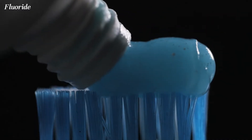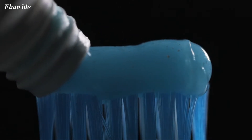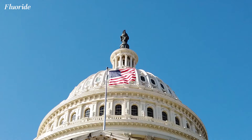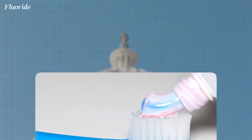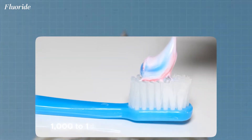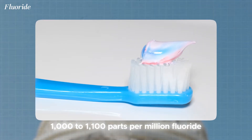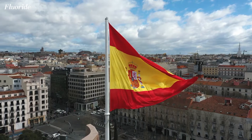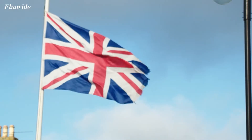Fluoride prevents cavities and is also thought to help with the formation of dental enamel. In the US, toothpastes contain around 1,000 to 1,100 parts per million fluoride, but this tends to be higher in European countries, including in the UK.